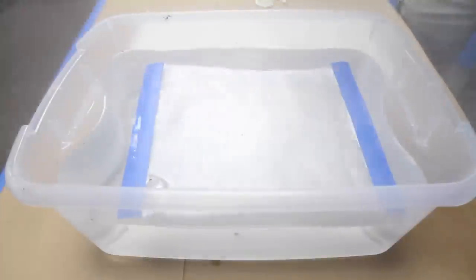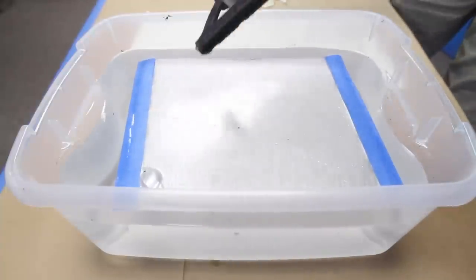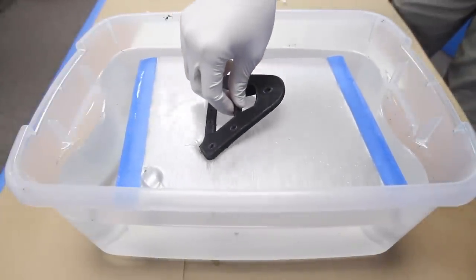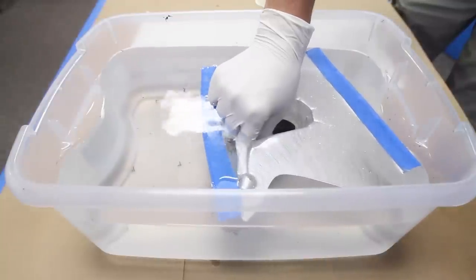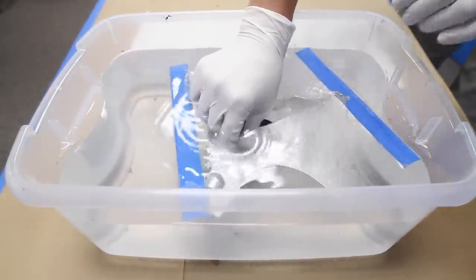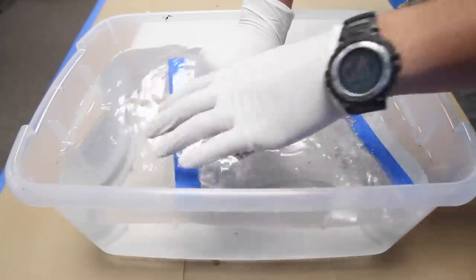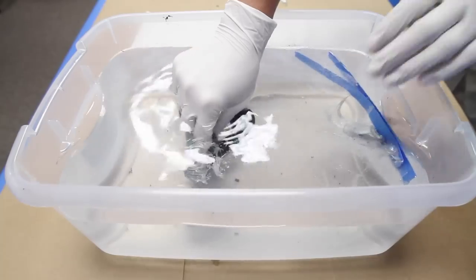When you dip the object in, try to go in at an angle because flat surfaces will tend to get air bubbles underneath them. Push it all the way through the film and then shake it to shake off the excess film. Turn it around and bring it back up through the water, and you're done.